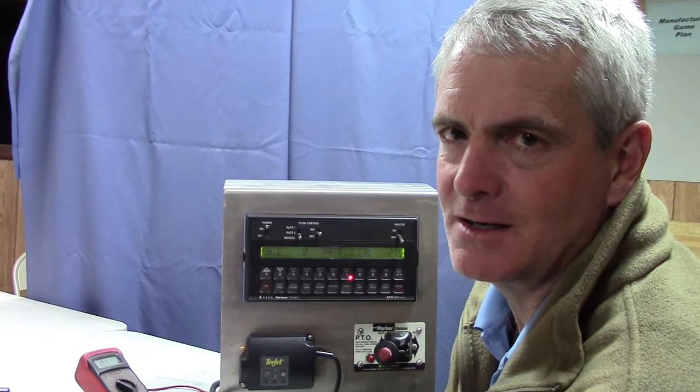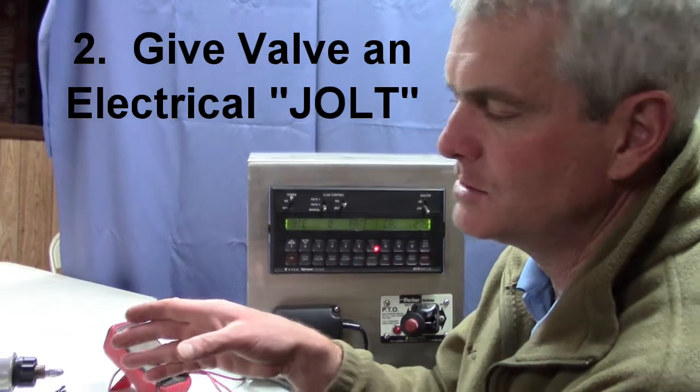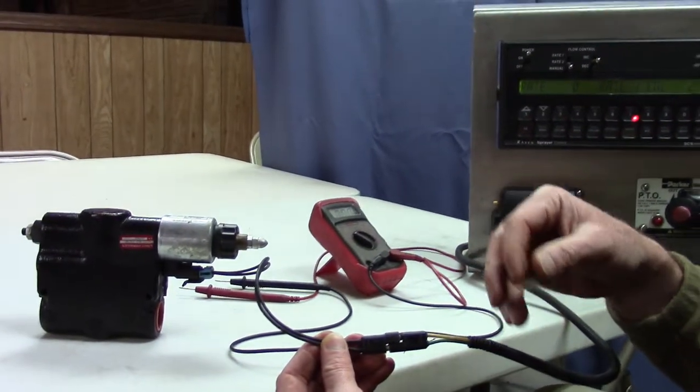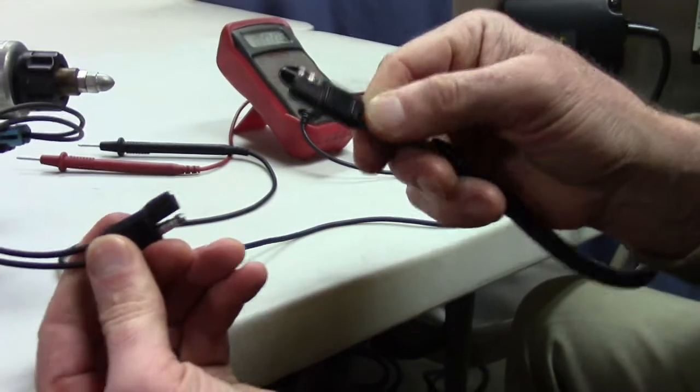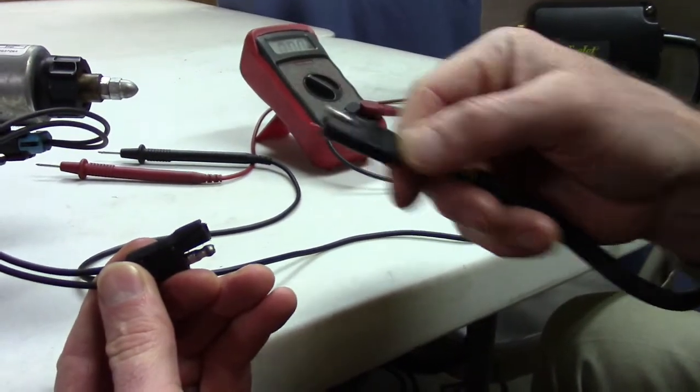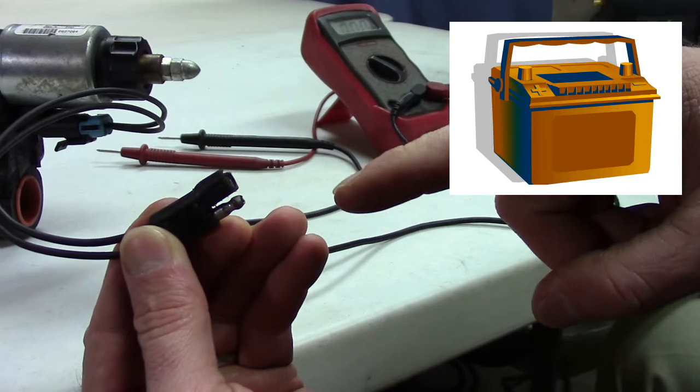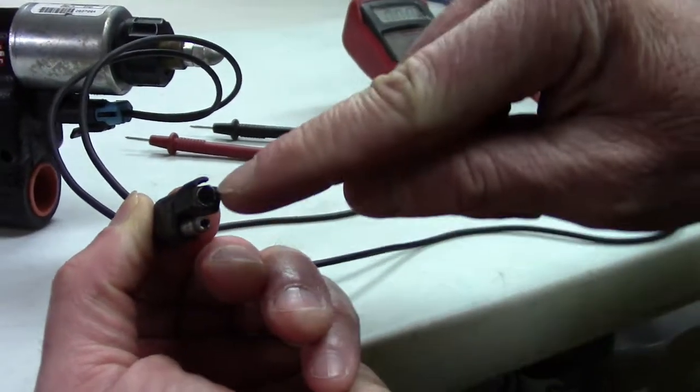Another tip we've learned about getting these PWM valves to work correctly, or to find out if they're working correctly, is that you can send 12 volts directly to this PWM valve using your pickup truck battery. The way you would do that is you disconnect the flow cable from the PWM valve and then you would just get a jumper wire that would come from your vehicle battery straight to this two prong trailer plug.